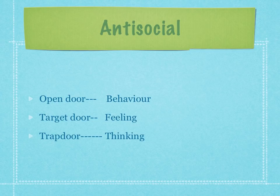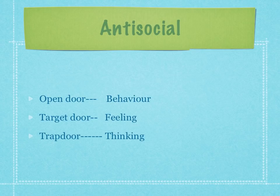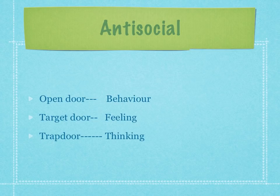Antisocial people, often called charming manipulators — their open door is behaviour. Their target door is feeling. And the trap door, the place where they don't want to go, is thinking. So you meet this person through behavioural observations aimed at feeling questions to integrate their thinking. They're quite adapted in some ways. They are people who often you will not see in psychotherapy, and if they do come to therapy, they often come because they've been sent — perhaps because the courts have wanted them to attend.